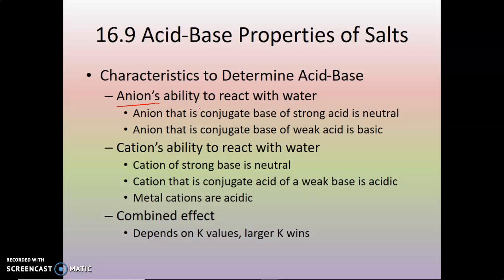Or you look at the cation's ability to react with water. So the cation of metals that are not strong base cations are going to be acidic. So almost all metal cations are acidic, except for, of course, column one and column two, your alkaline earth metals and your alkaline metals. And then there's a combined effect, depending upon your K values, and the larger K value wins in that kind of situation. But we're only going to focus on the anions and the cations' abilities to react with water.